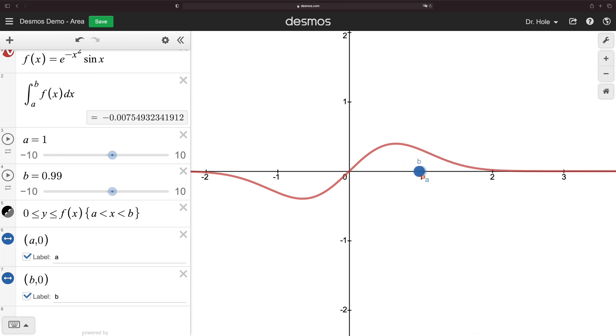So notice something curious here. When b is to the right, we get a shading. But when b is to the left, we don't get a shading. So let's remedy that.